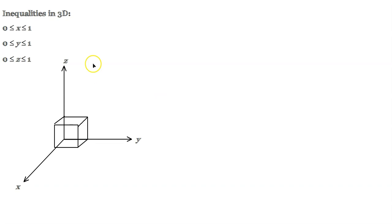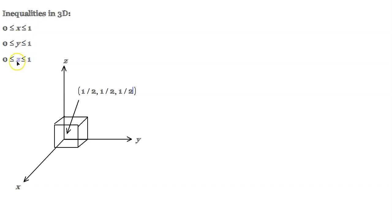One thing we should observe: because these are inequalities, it means that any point on the surface of the shape would satisfy the inequality, but also points inside the shape. For example, if I take one-half for x, one-half for y, and one-half for z and plug those in — well, one-half is between 0 and 1, one-half on y is between 0 and 1, and one-half on z is also between 0 and 1 inclusive. So that works. Any point on the surface would also work.